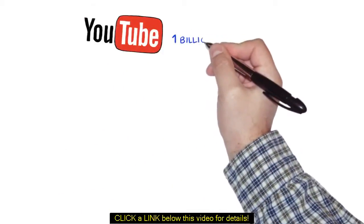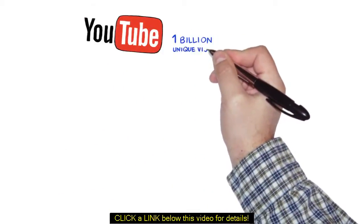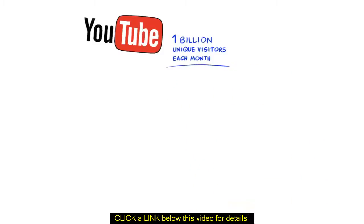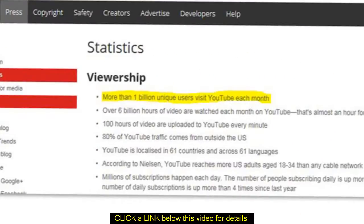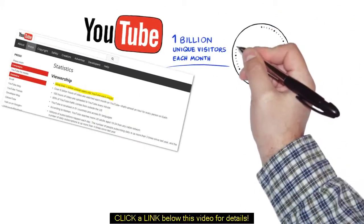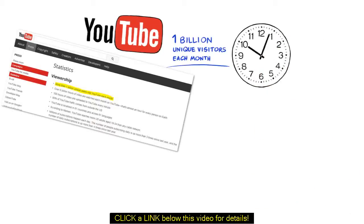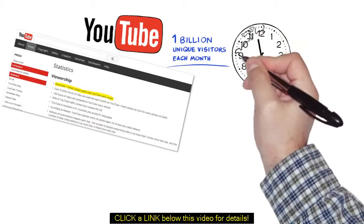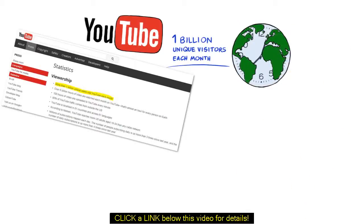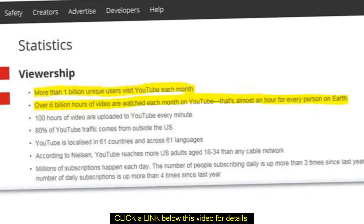Did you know that YouTube gets over 1 billion unique visitors each month to its website? Well, now you do. And did you know that over 6 billion hours of videos are being watched each month on YouTube? That's almost one hour for every person on Earth. Well, now you do.